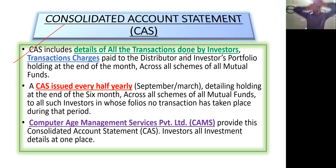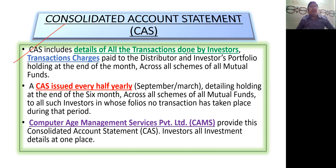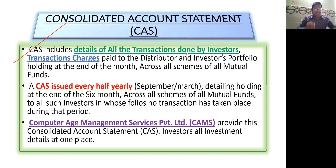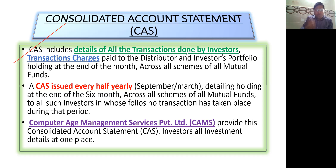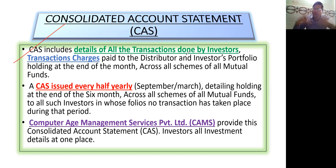CAS includes details of all the transactions done by investors, and whatever transaction charges were paid to distributors. It also shows the investor's portfolio holding — how much portfolio holding at the end of the month — across all schemes of all mutual funds.